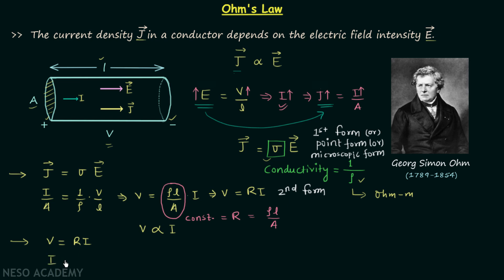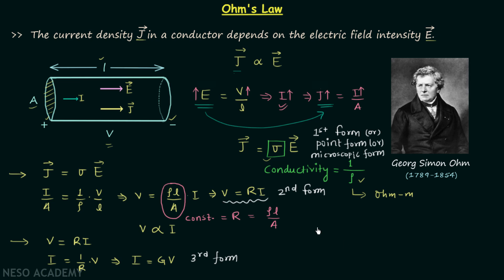For the third form of Ohm's law, we take V equals R times I and divide both sides by R, giving I equals (1/R) times V. Here, 1/R is known as conductance, represented by G. So I equals G times V — this is the third form of Ohm's law. The conductors which follow V equals RI precisely are known as ohmic conductors. Conductors which do not follow V equals RI, meaning their resistance is not constant, are called non-ohmic conductors.